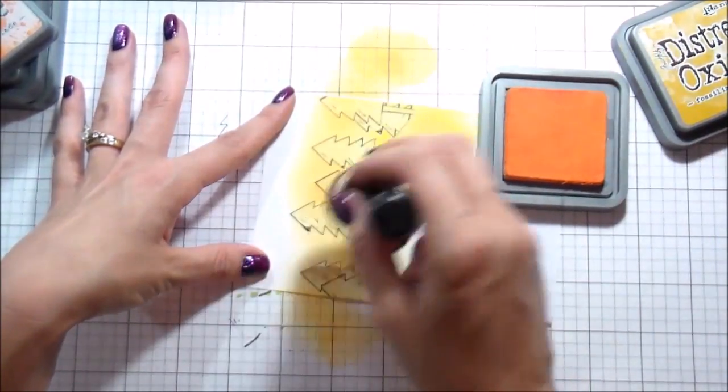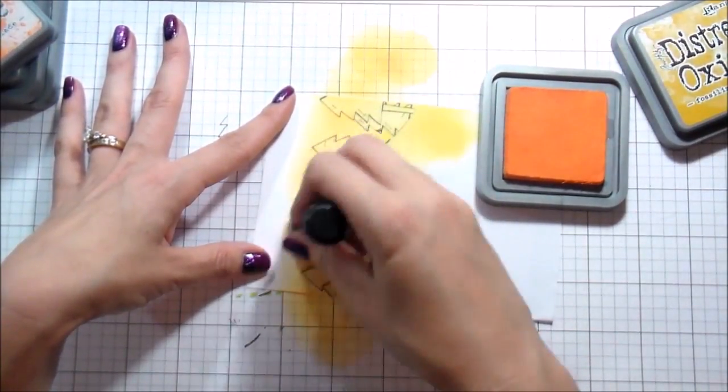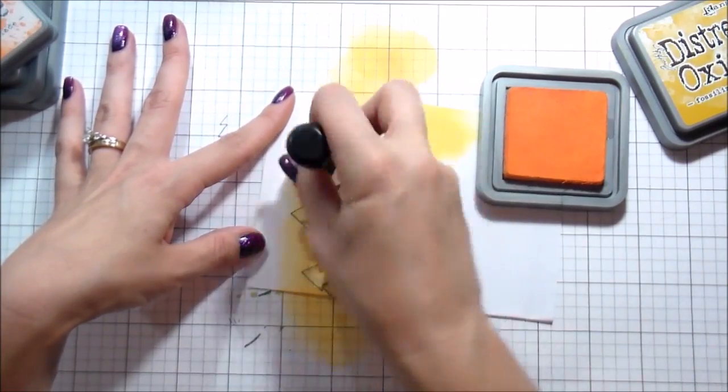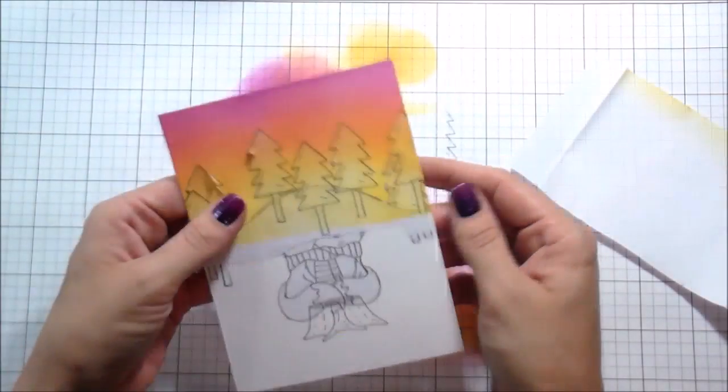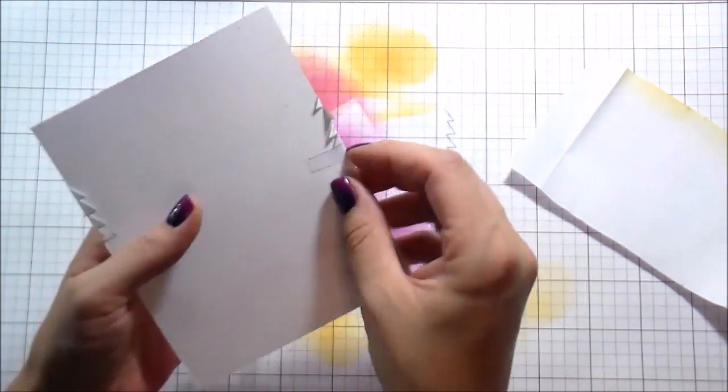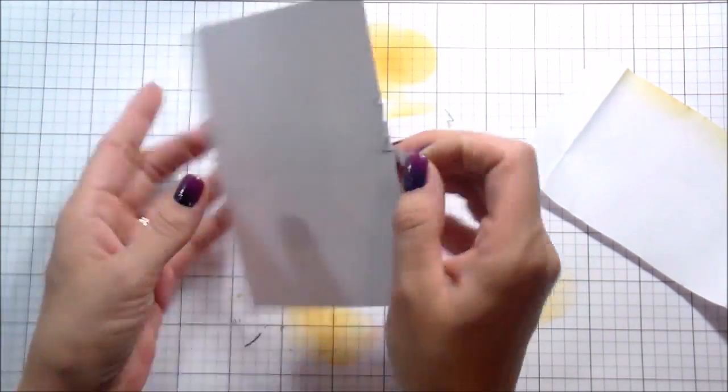I will warn you, anytime you're using masks, anything that is a sharp corner, so not a rounded edge, but a very sharp corner, they pull up really easily. I don't know why it is. It just always seems to catch that sponge, so just something to be aware of.